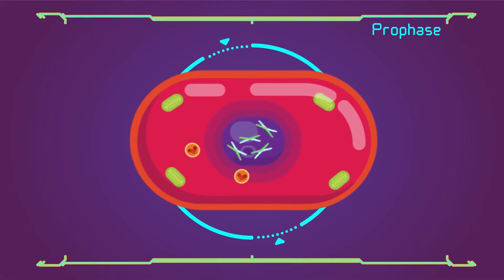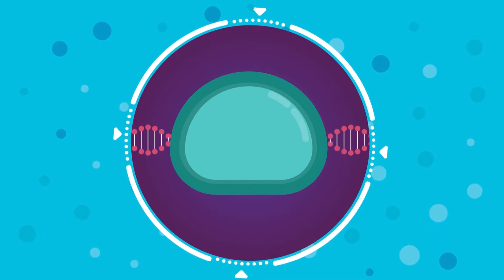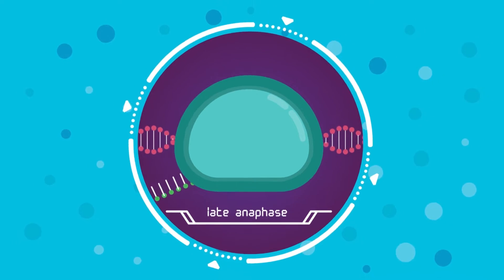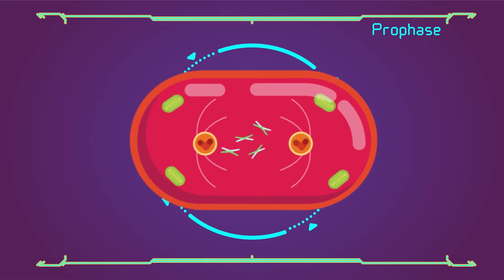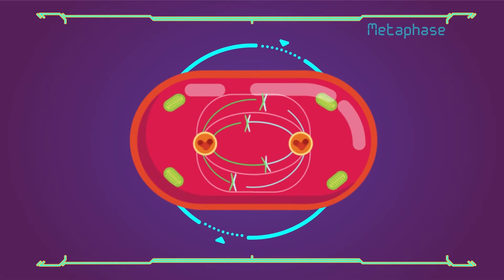Nuclear envelope disintegrates. Gene transcription ceases during prophase and does not resume until late anaphase to early G1 phase. The nucleolus also disappears during early prophase. Centrosome gives rise to mitotic apparatus, i.e. generation of spindle tubules.